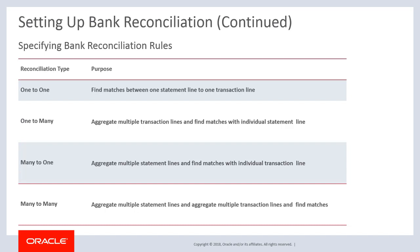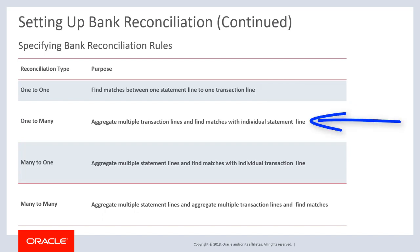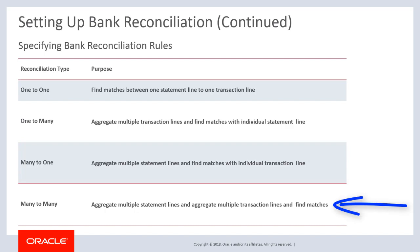Depending on the reconciliation type, you select different grouping criteria for statement lines and transaction lines. The different reconciliation types include: one-to-one, used to find matches between one statement line and one transaction line; one-to-many, used to aggregate multiple transaction lines and find matches with an individual statement line; many-to-one, used to aggregate multiple statement lines and find matches with an individual transaction line; and many-to-many, used to aggregate multiple statement lines and multiple transaction lines and find matches.